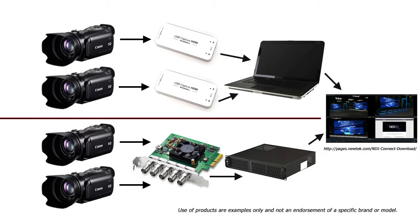To convert your camera signal into NDI, here's what you'll need: a camera or cameras pointed at the scoreboard or clock displays. It is best to get as much of a straight-on shot of the clocks as possible. From there you can either ingest the camera feed into the SweetCG computer or another computer using a capture card or USB capture dongle.